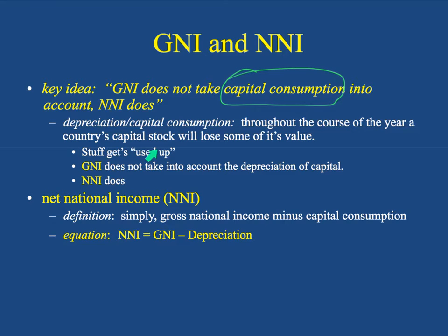If you bought that bike at the beginning of the year and count it as GNI, you'd realize that at the end of the year that GNI is inaccurate — you have to take into account the use of that bike. At the end of the year, to sell that mountain bike you're going to get a lot less money, maybe even half, because it has depreciated. In fancy econ terms, you have consumed its capital value.